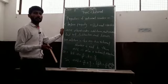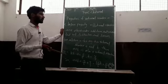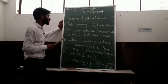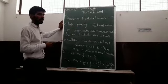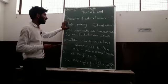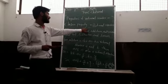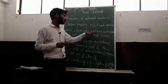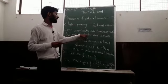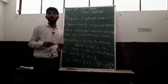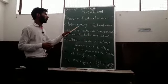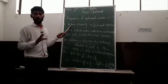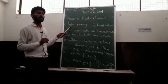Now let's start the topic properties of rational numbers. First of all, the first property is closure property. Rational numbers are closed under addition and multiplication, but not subtraction and division. If you take two rational numbers a and b, their sum or their product...